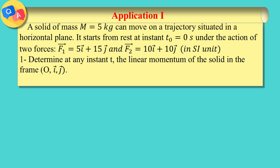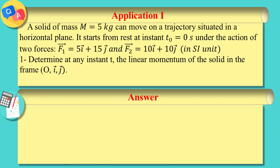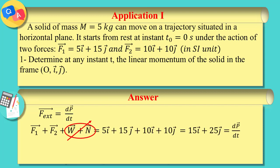Application one: a solid of mass m equals 5 kg can move on a trajectory in a horizontal plane. It starts from rest at instant t zero under the action of two forces F1 and F2. Determine at any time t the linear momentum of the solid in the frame oij. We apply Newton's second law: the sum of external forces equals dp by dt. The forces acting on the solid are F1, F2, weight, and normal. Since weight plus normal equals zero, we add the vectors F1 and F2 to get 15i plus 25j, which equals dp vector by dt.